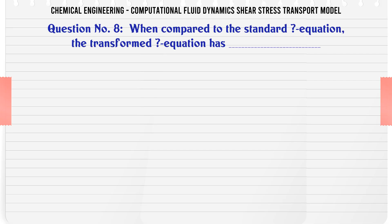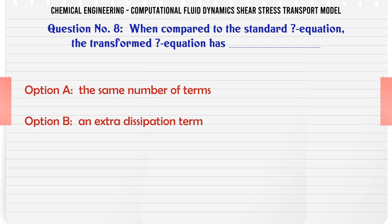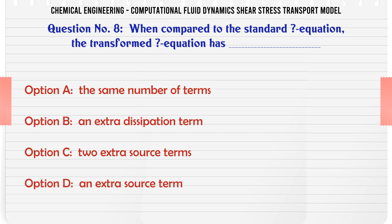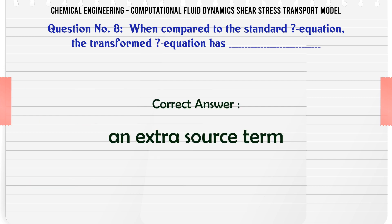When compared to the standard ω equation, the transformed ω equation has: A) The same number of terms — B) An extra dissipation term — C) Two extra source terms — D) An extra source term. The correct answer is: an extra source term.